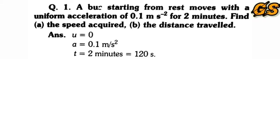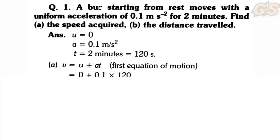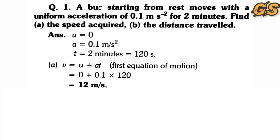To find the final velocity v, we use the first equation of motion: v = u + at. Substituting: v = 0 + 0.1 × 120 = 12 m/s. So the final velocity of the bus after 2 minutes is 12 m/s.